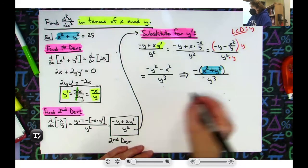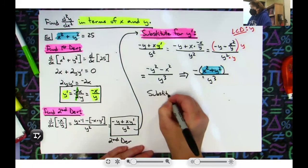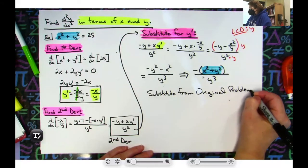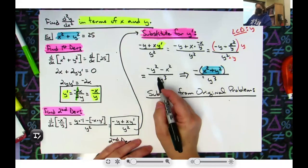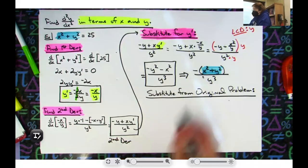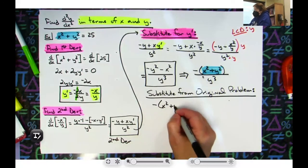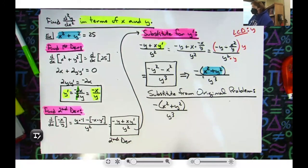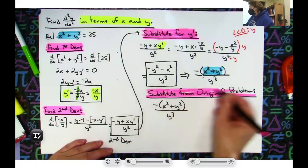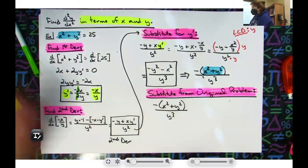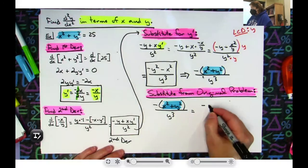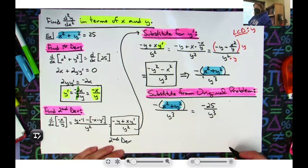I'll box that previous form because technically it was already the second derivative in terms of x and y. Now for the last step — substituting from the original problem. We have negative times x squared plus y squared over y cubed. And what does x squared plus y squared equal? Just 25. So the final answer is negative 25 over y cubed.